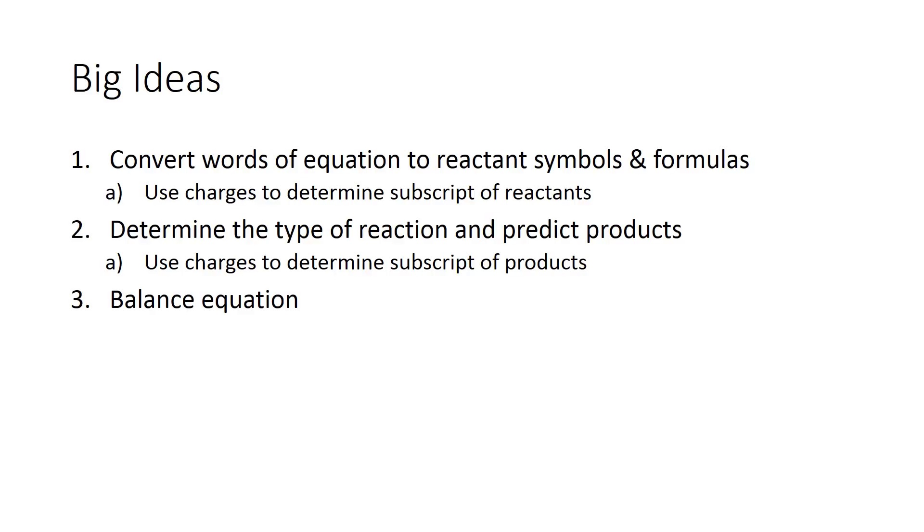The steps we're going to use to address every problem: first, convert the words of the equation to the reactant symbols and formulas. We are going to check charges and make sure that our charges create neutral compounds to become the subscript. We are going to figure out what type of reaction we have because you will only be given the reactants. If we can figure out the type of reaction, we can then predict the products. And again, we're going to look at the charges, which will determine our subscript for those products. The final step is to balance the equation.